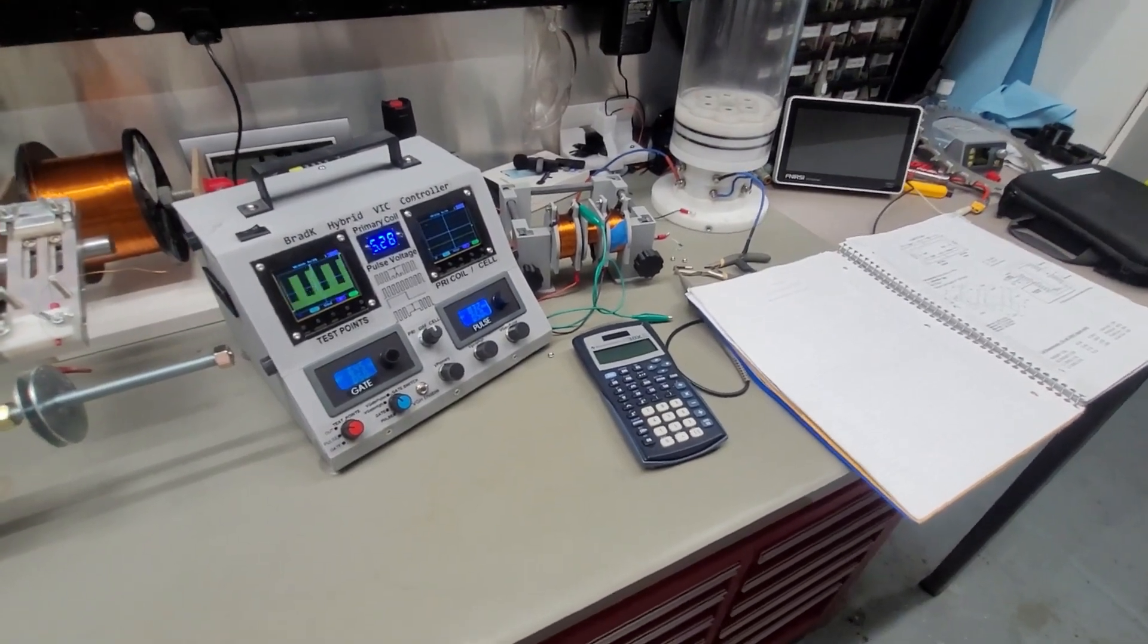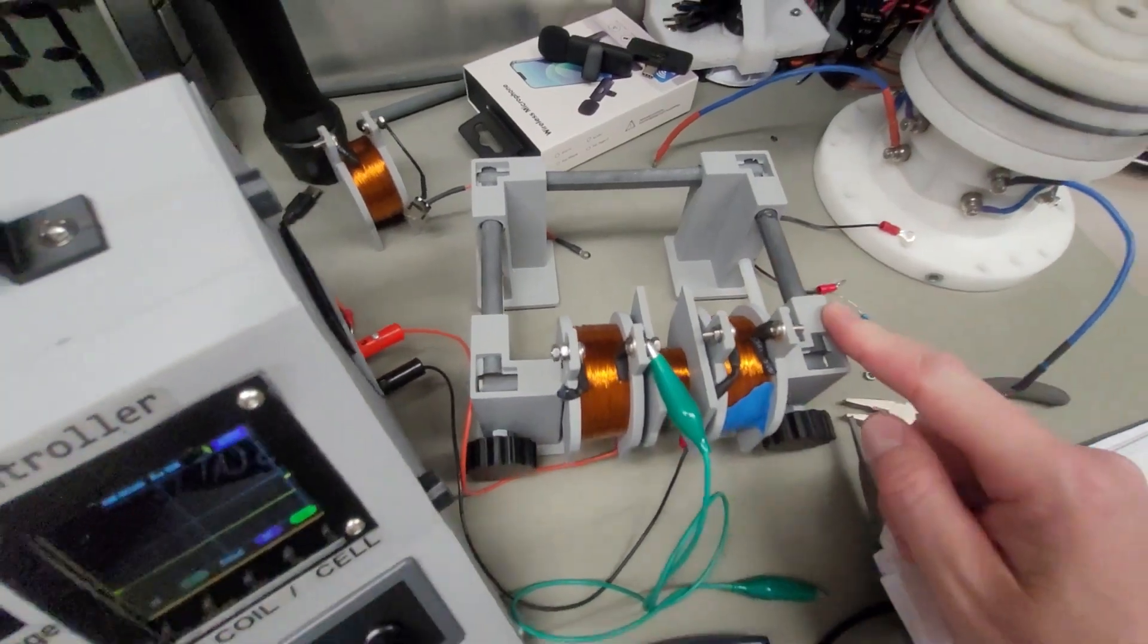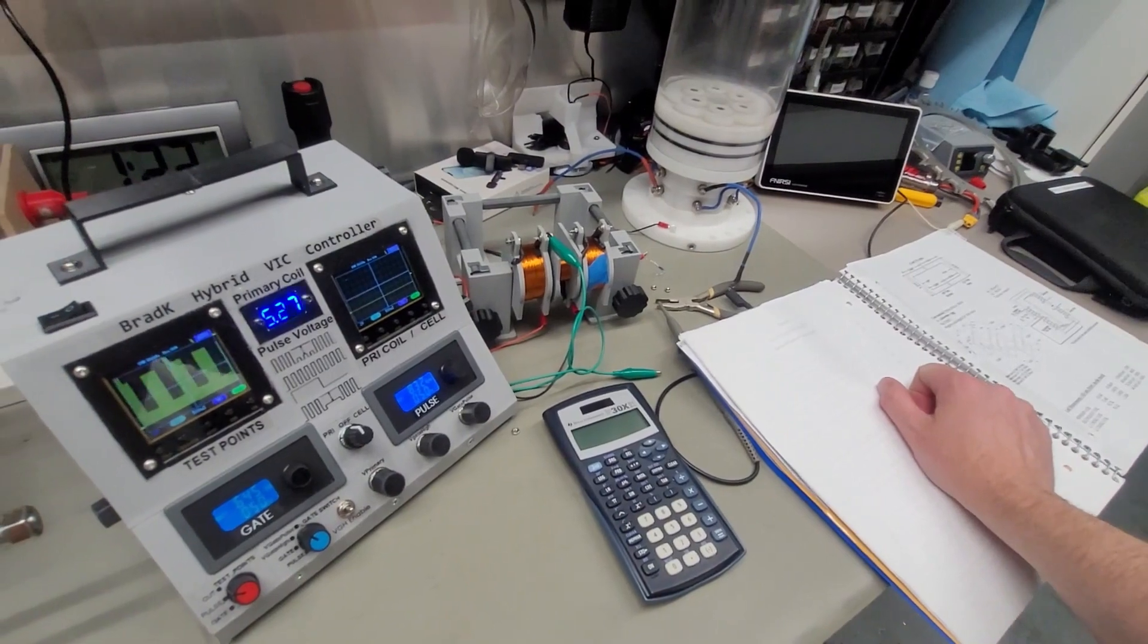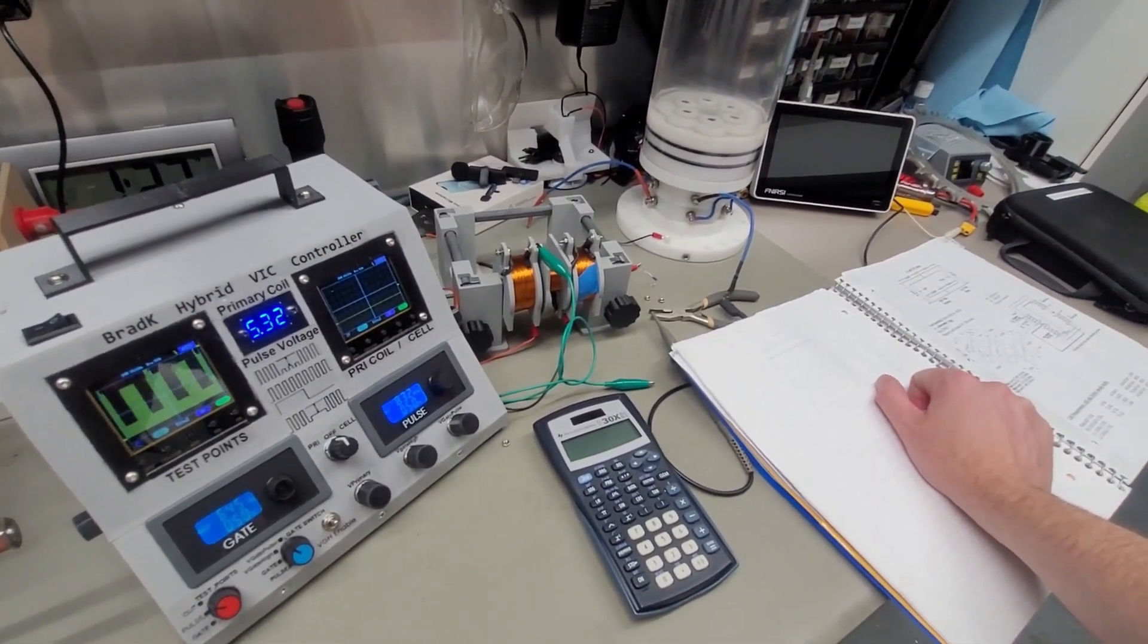Alright, well, unfortunate news, this core is not going to work. Permeability is too low, leakage is way too high. There's nothing I can do. I realized tonight there's no way to compensate for that leakage inductance or to reduce it.